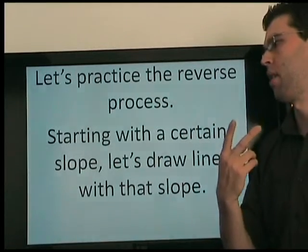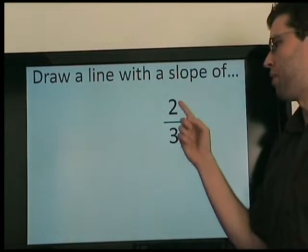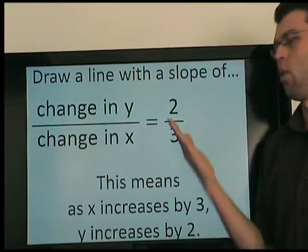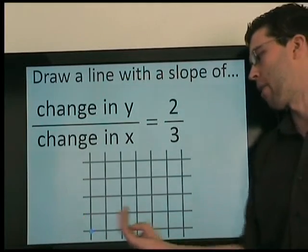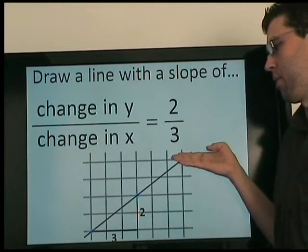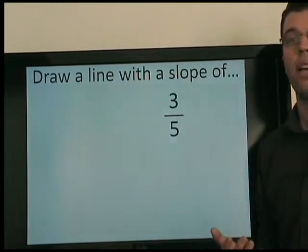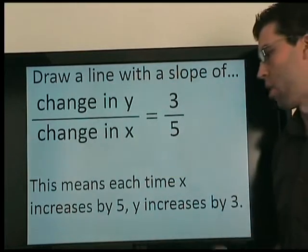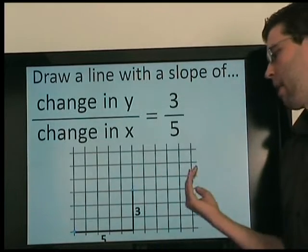Let's practice the reverse process. Now we're drawing lines with a given slope. So let's draw a line with a slope of 2 thirds. What does that mean? It means as x increases by 3, y increases by 2. So we start from our point and we go right 3, up 2. As x increases by 3, y increases by 2, and we connect. A slope of 3 fifths — again, it means as x increases by 5, y increases by 3. So we have our points, we go right 5 and up 3.